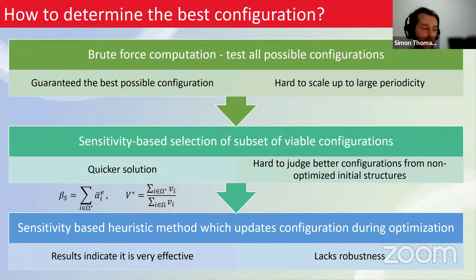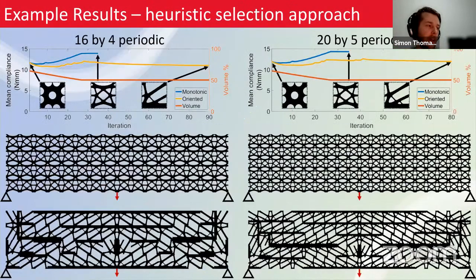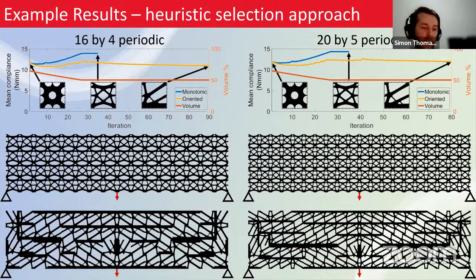This leads to a heuristic method to update the orientation state of unit cells in a periodic structure. Although this heuristic method shows very effective results, it does lack a certain level of robustness. For example results: a 16×4 and a 20×5 periodic bridge structure. The middle row shows traditional translational uniform periodic arrangements from standard optimization literature.